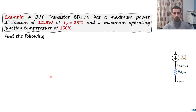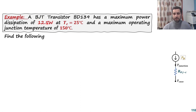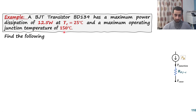So we have the first question: we have a BJT transistor, the VD139, which has a maximum power dissipation of 12.5 watts. This value is taken from the datasheet — it is the maximum power dissipation, so this transistor can dissipate 10 W, 9 W, or 12 W without any problem, but that is at a case temperature of 25°C. The maximum operating junction temperature is 150°C, and I have to maintain that. Now find the following.